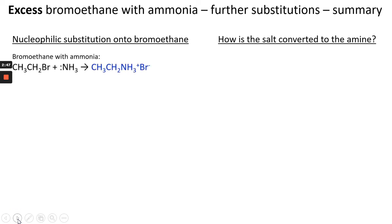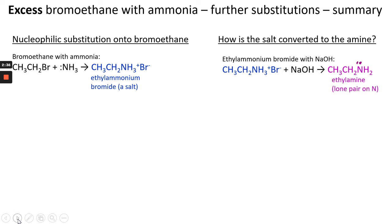The bromoethane with ammonia we've just looked at, making the ethyl ammonium bromide, which is our salt. The ethyl ammonium bromide can react with NaOH to make our ethyl amine with the lone pair on nitrogen. We've got sodium bromide and water made as a side product.